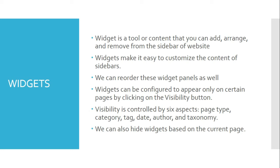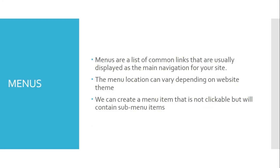Let us see some insights about menus. Menus are a list of common links that are usually displayed as the main navigation for your site. The menu location can vary depending on website theme, and some themes offer additional menus such as social links menus. We can create a menu item that is not clickable but will contain sub-menu items — for that you need to add a custom link menu item and add the hash symbol in the URL field.